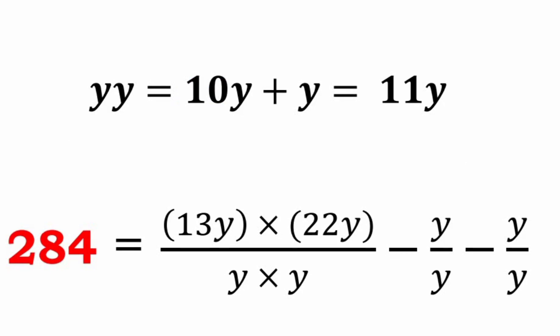The general expression then simplifies to: 13y into 22y, whole divided by (y into y minus y/y minus y/y). When we multiply 13y into 22y, we get 286y². The y² in numerator and denominator cancel, leaving 286 minus y/y equals 286 minus 1 minus 1, which equals 284.